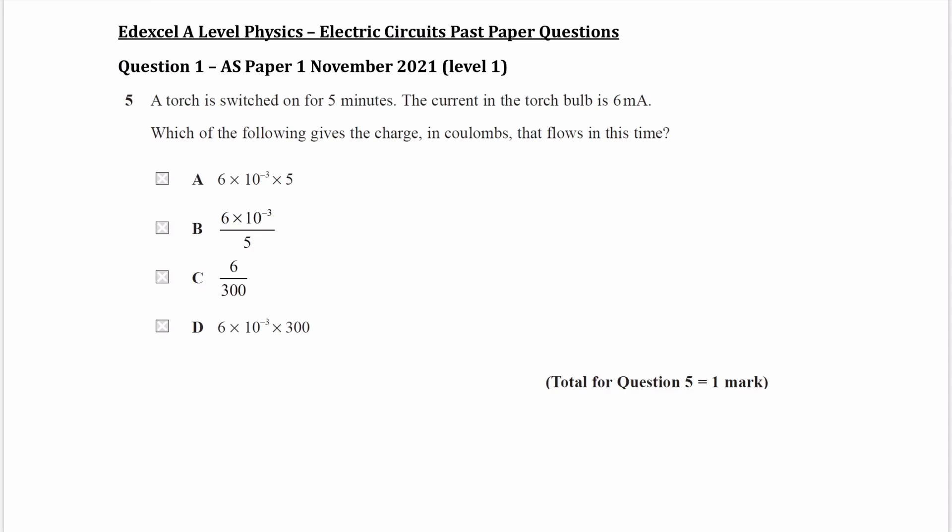So for this question we are told that the torch is switched on for 5 minutes, so we're given a time. t is equal to 5 minutes, which is the same thing as 5 times 60 seconds or 300 seconds.